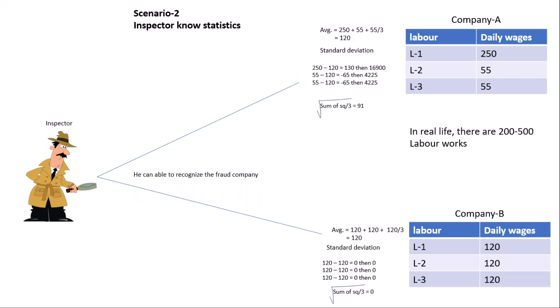Now this is scenario number two, in which the inspector knows statistics. I calculate the standard deviation. As you can see, the standard deviation of Company A is 91, and the standard deviation of Company B is 0.